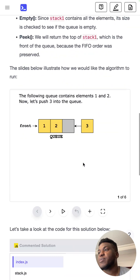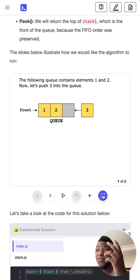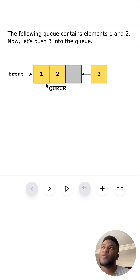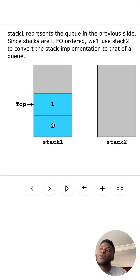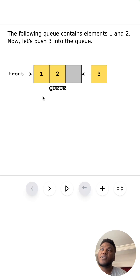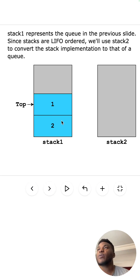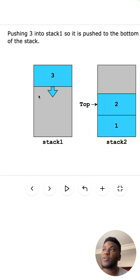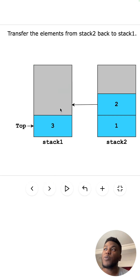Looking at the diagram: imagine we have a queue with one, two, and we want to bring three in. The stack represents that queue — taking from the top gives us what's at the front. To insert three, we first transfer everything to stack two, then put three into stack one, then bring everything back.